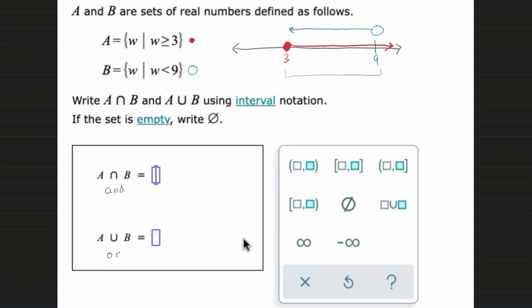We know that since this is a filled in circle, we're going to have a bracket here. And since this is an open one, we're going to have a parenthesis here. So for this one, we have a bracket. We're starting at 3, and we're going to, but not including, 9. So that's the answer for that one.